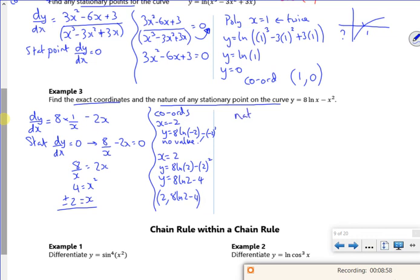Right then. So for the nature, I differentiate it again. So I had for dy by dx, I had it as 8x to the minus 1. So it all works minus 2x. So if I differentiate it again, it's minus 8x to the minus 2 minus 2. So when x is 2, that gives me d2y by dx squared. It gives me minus 4.